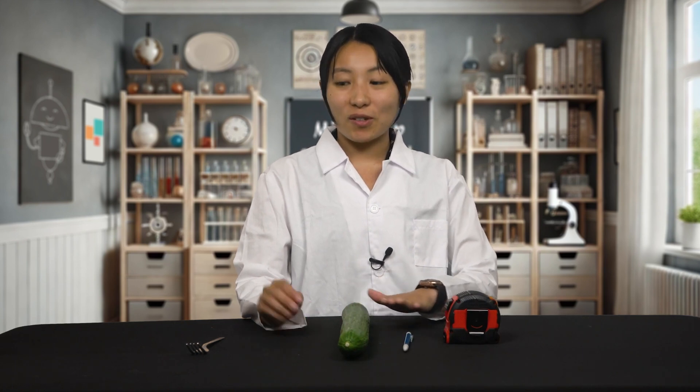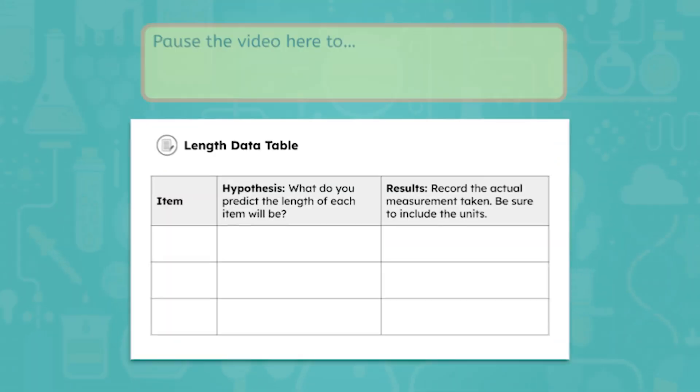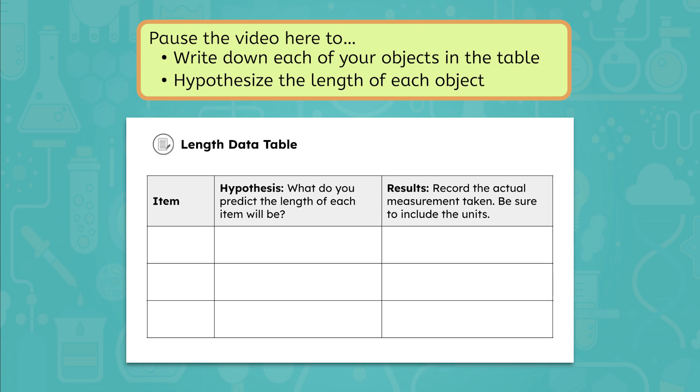Based on your tool, pick three items to measure. I've selected a pencil, a cucumber, and a fork. Pause the video here to select your items, and write down each of your objects in the data table. Once you have your items, hypothesize the length of each object. A fingernail is about one centimeter across, and a baseball bat is about one meter long. What do you predict the lengths of your three items will be?